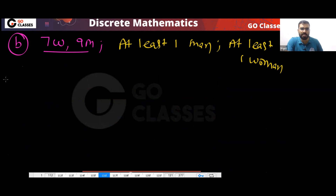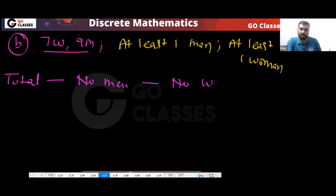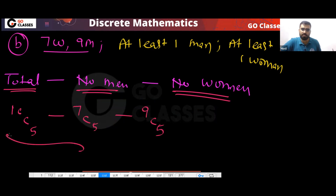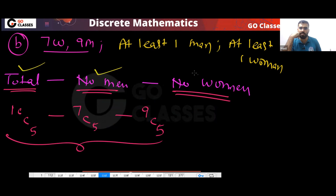The correct answer: from total remove when there is no man, and also remove when there is no woman. Total is 16C5. When no man: that is 7C5. When no woman: that is 9C5. So the answer is 16C5 minus 7C5 minus 9C5.